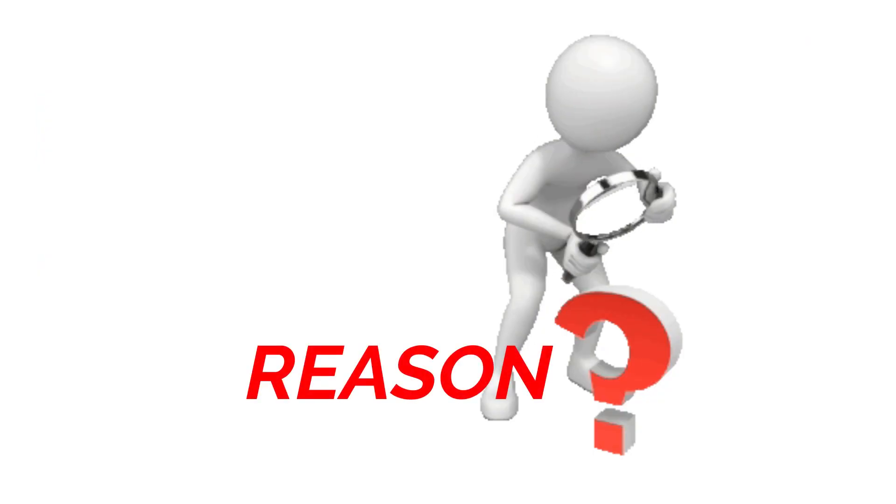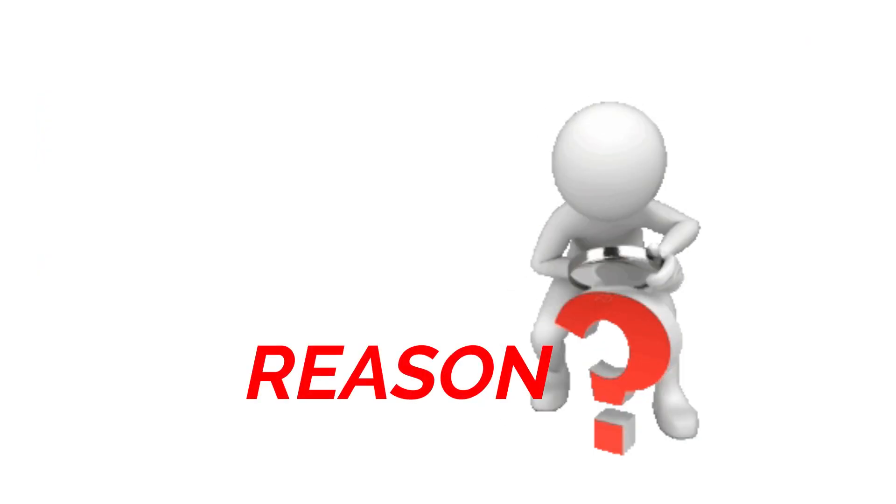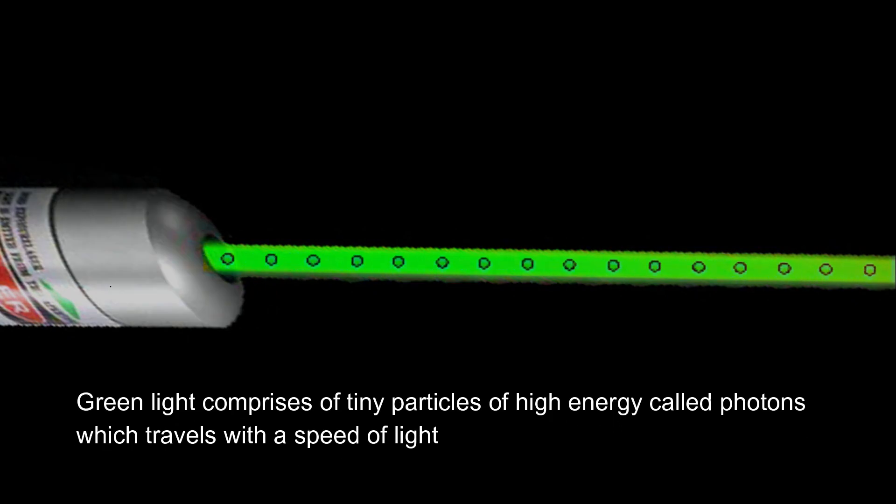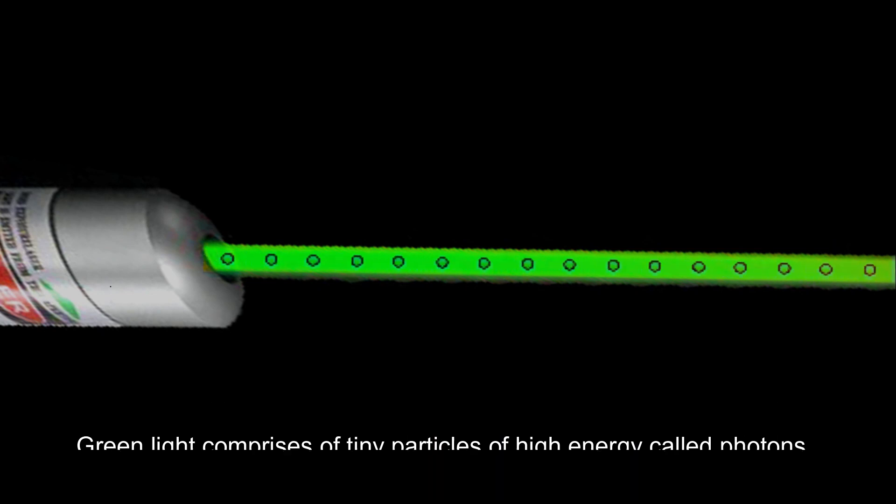But what could be the probable reason for that? The green light comprises of tiny particles of high energy. They are called photons. These photons travel with the speed of light.